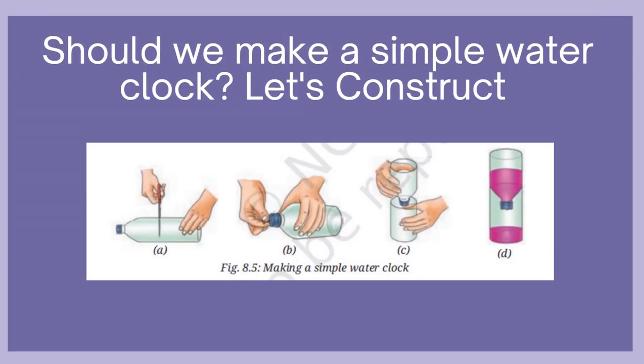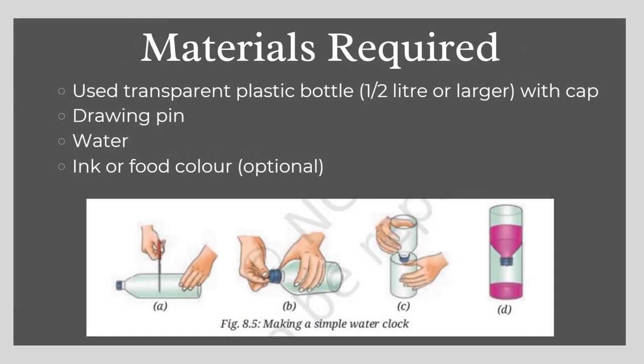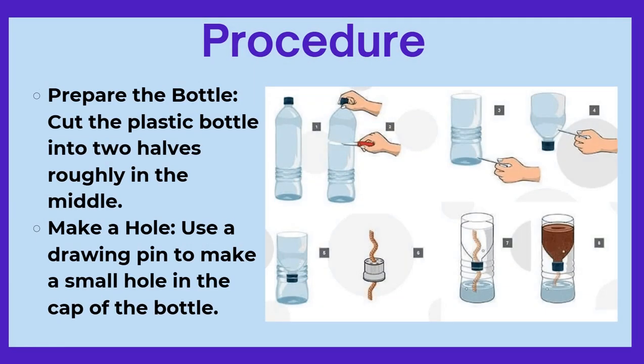Now let's try to make a simple water clock. You need some materials: a used transparent plastic bottle with cap, a drawing pin, water, and ink or fruit color. First, prepare the bottle by cutting it into two halves roughly in the middle. Then use a drawing pin to make a small hole in the cap of the bottle.